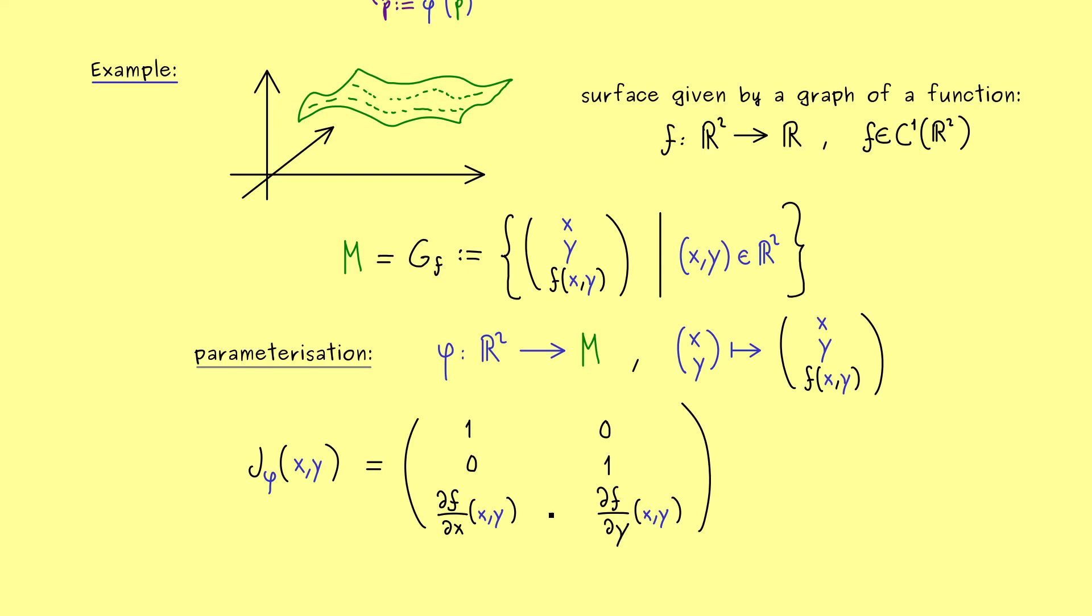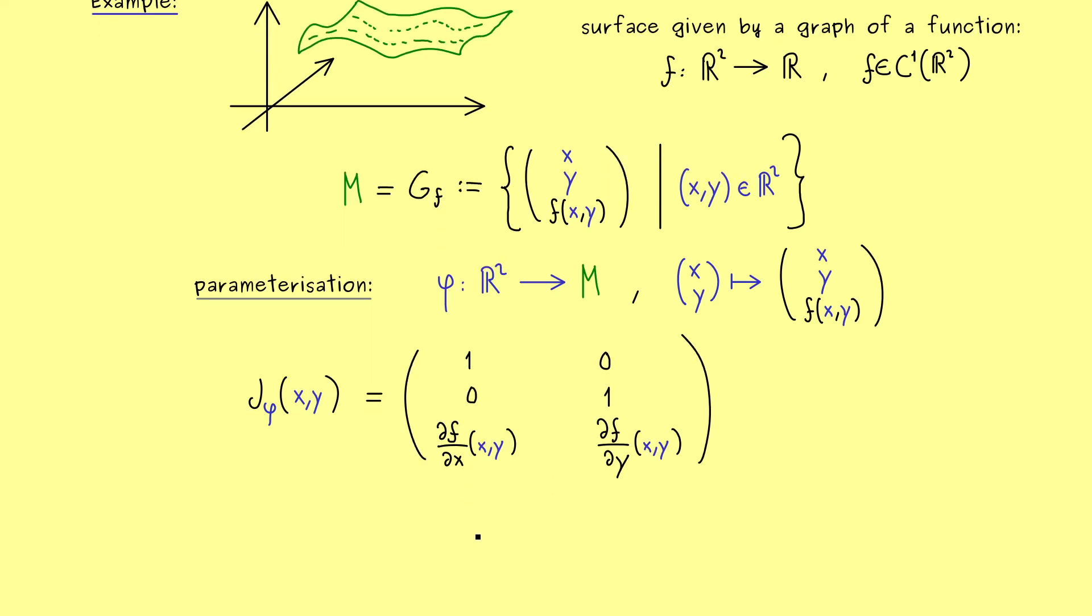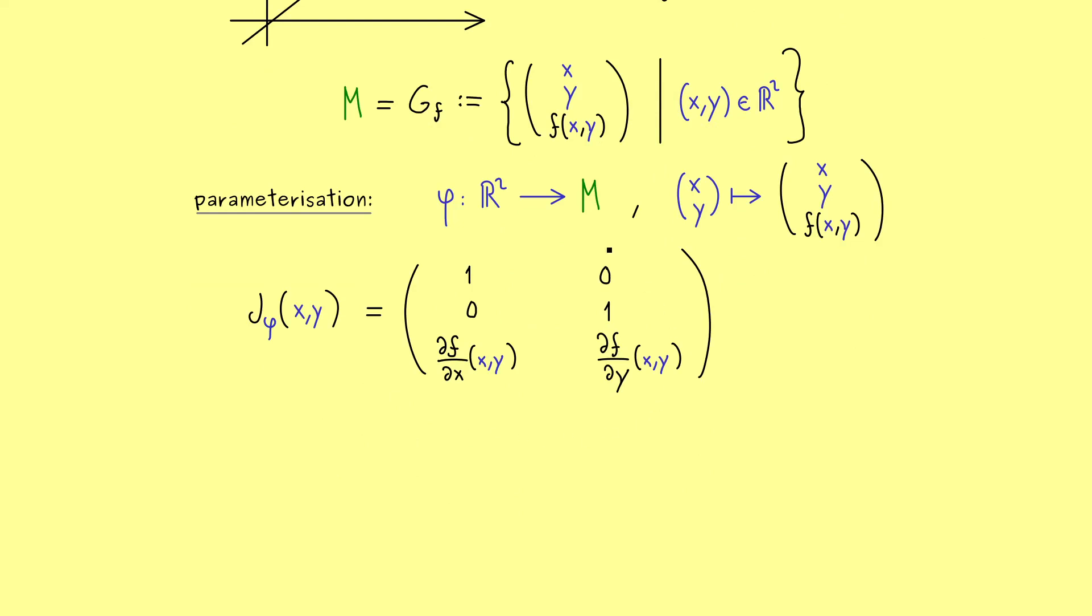This is something you can immediately write down. The tangent space is the span of these two vectors. Of course the point P should be given by (x,y,f(x,y)). Then there is not much to do - you write linear span and put in both vectors. There we have it, this is a very concrete example of a tangent space of a submanifold.